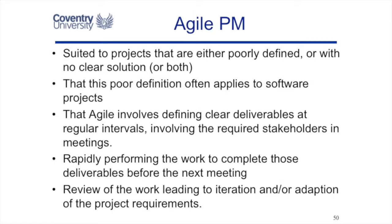Agile project management suits situations that are poorly defined — where we don't know exactly how or what we need to achieve. So we work on something for a week, show the customer, and see what they think. We must show clear deliverables at showcase events because stakeholders come to see working software. We then rapidly move from meeting to meeting, producing more and more functionality and iterating and adapting as the customer gives feedback.